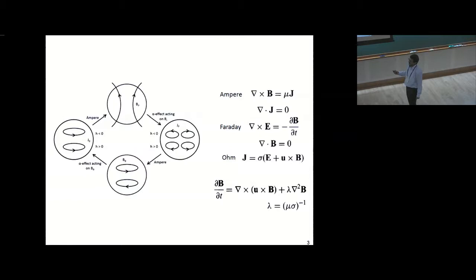Let's go into a bit more detail, just to give some ideas and start with some basics: Ampere's law, Faraday's and Ohm's law, conservation of charge. I want to talk about alpha effects, so let's say we start with a poloidal field B in radial plus Z direction, and the alpha effect acts on this.